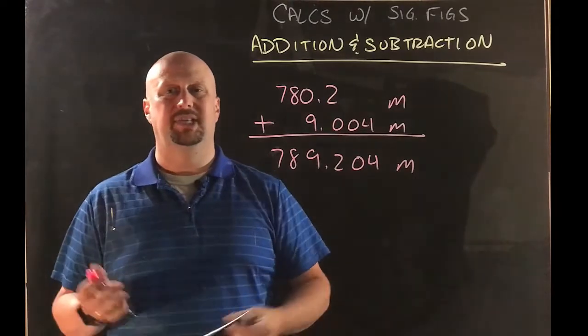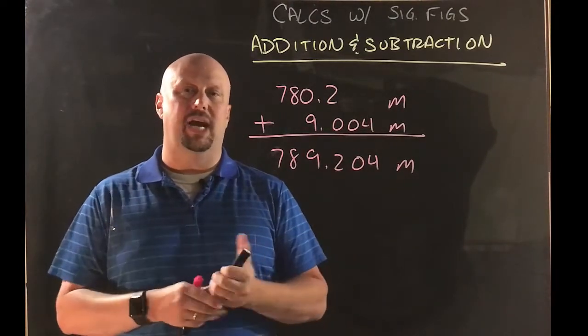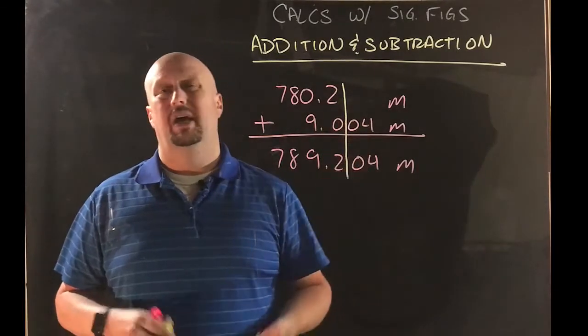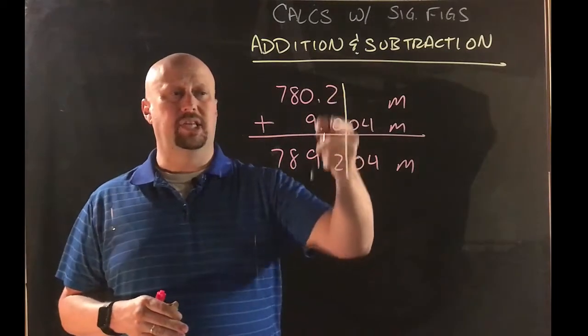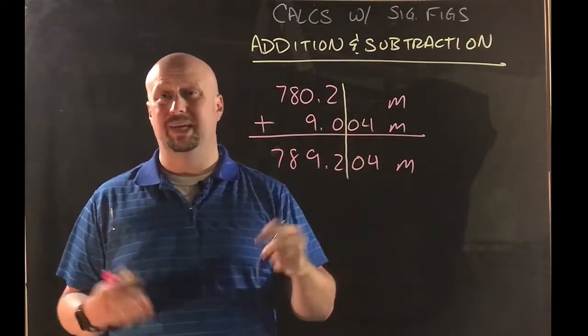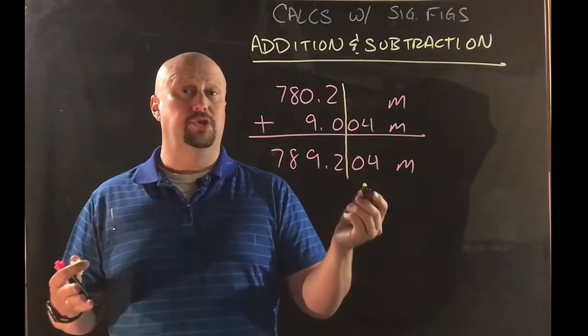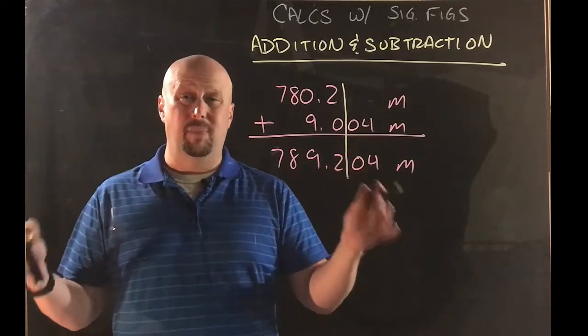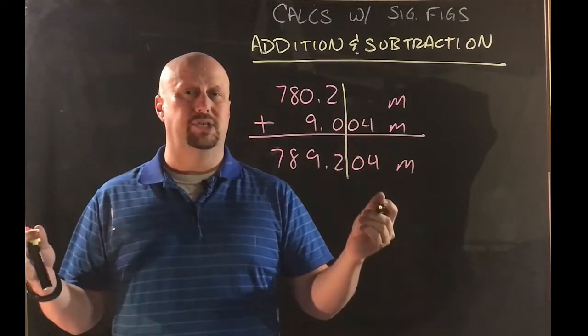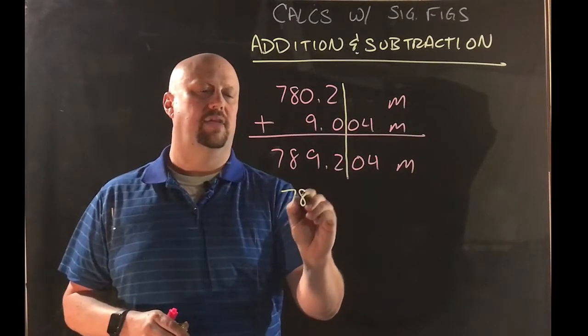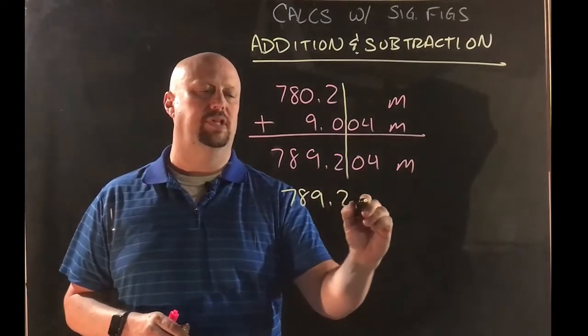This measurement was a lot less precise. So whenever you're adding and subtracting, what you do is you essentially take the least precise measurement and cut it off there. That's the least precise down to the one decimal place, down to the decimeter place, essentially. And so we would then round that to that. There's not a certain number of sig figs in this case. It's where's the decimal? How many places do I go to? So in this case, that becomes 789.2 meters.